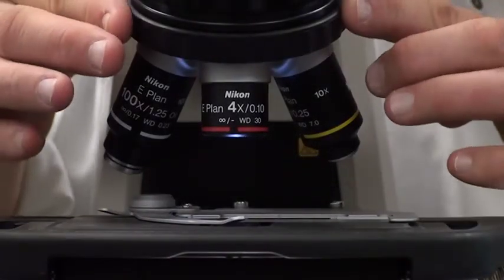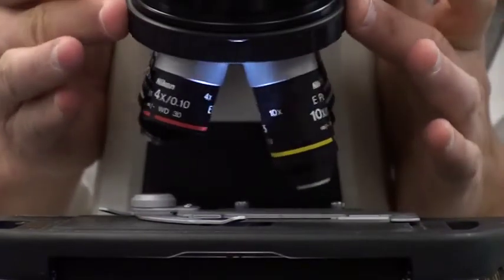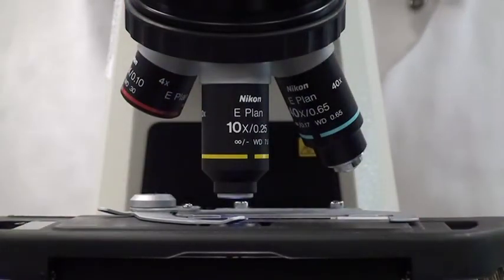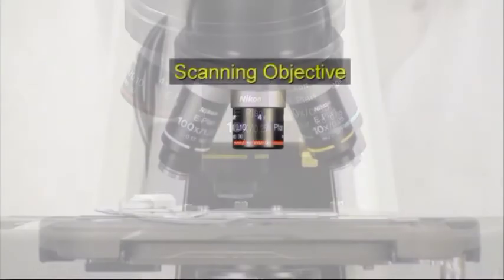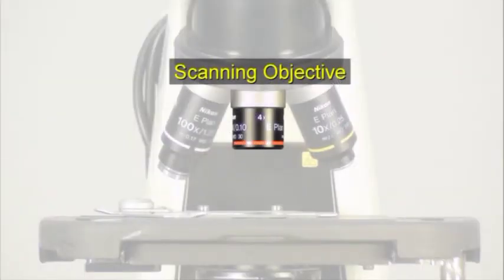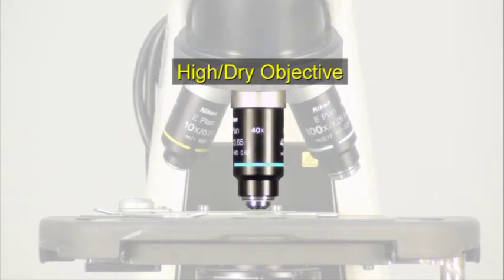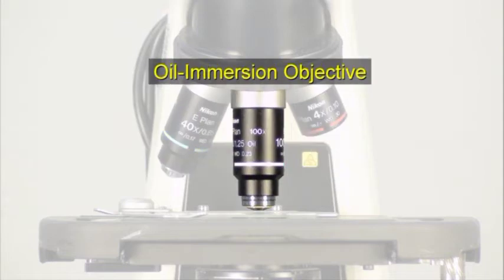The revolving nose piece is equipped with four objectives which allows the magnification to be changed quickly and easily. These include the scanning objective, low power objective, high dry objective, and oil immersion objective.